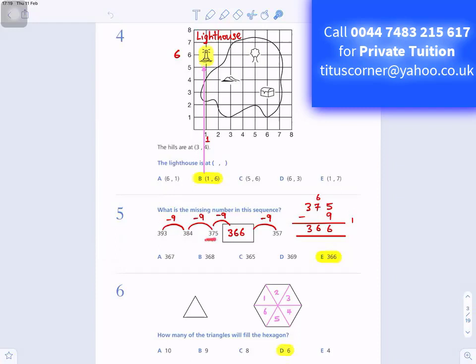So 375 minus 9. 5 take away 9, you cannot go. You will borrow 1 from the 7. It becomes 15. 15 take away 9 is 6. And you're left with 6 here. You write the 6 down. And 3 take away 0 is 3. So your answer is 366.